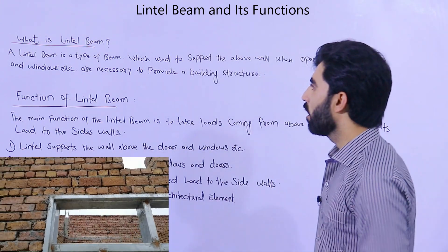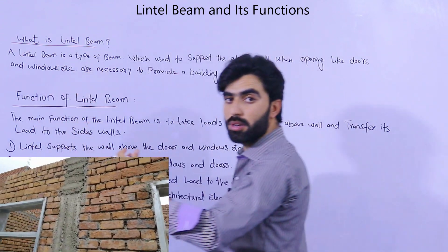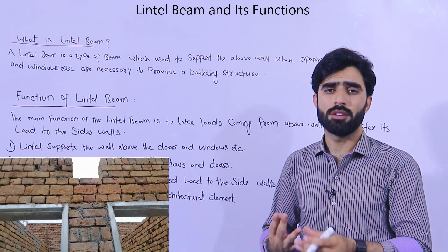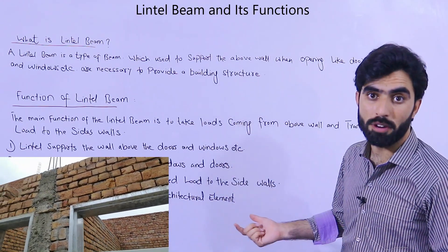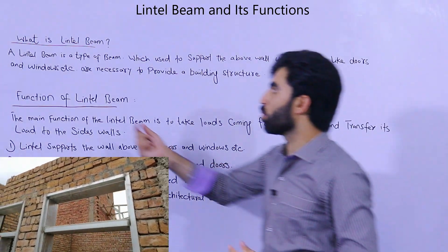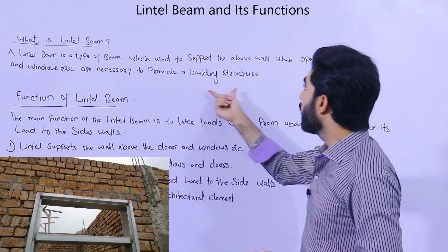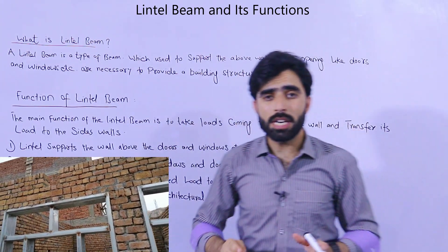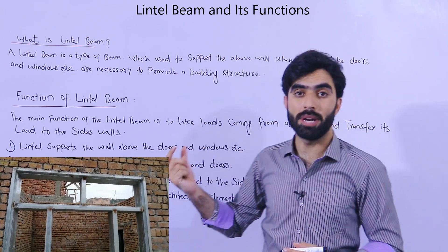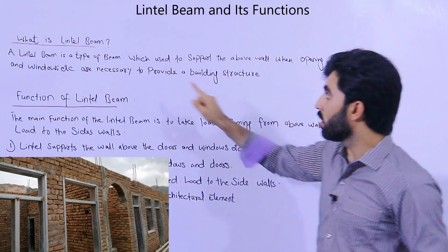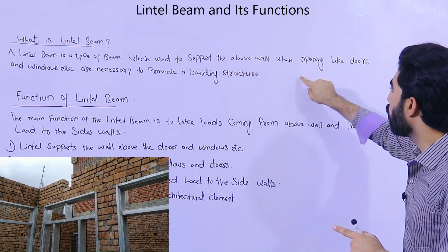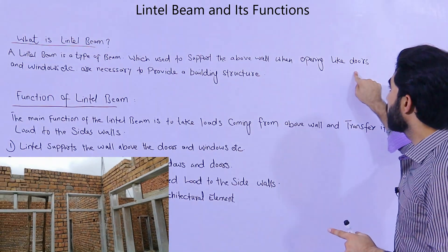The first topic is: what is a lintel beam? A lintel beam is a type of beam — just like we have plinth beam, floor beam, and concealed beam, a lintel beam is also a type of beam. It is used to support the wall above openings like doors and windows. It is an important component to provide in house and building construction, because it supports the wall above openings like doors and windows.